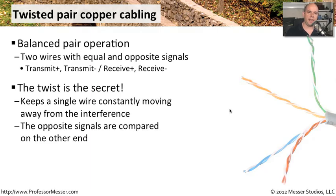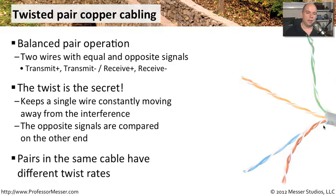The twist and the difference between these signals is the secret of twisted pair cabling. As the cable passes interference, that interference is closest to only one wire at a time and constantly changes. We can compare the signals across both wires at the receiving end to minimize interference. Additionally, even within the same cable, each pair uses a different twist rate, so none of the pairs interfere significantly with each other.